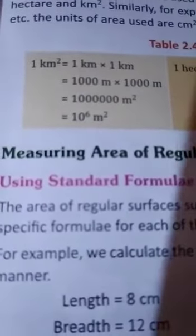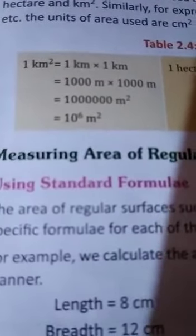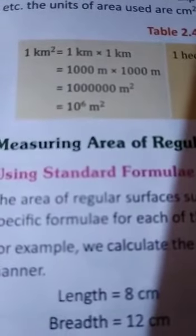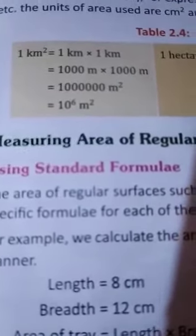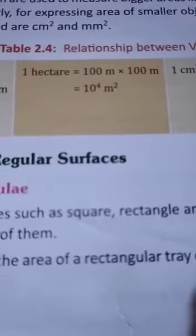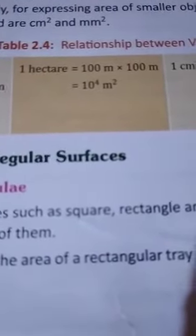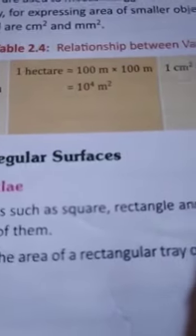See table 2.4, these are the few things which you have to remember. One kilometer square means one kilometer into one kilometer. If you split it into meter, you get it as thousand meter into thousand meter or 10 to the power 6 meter square. One hectare is equal to hundred meter into hundred meter or 10 to the power 4 meter square.